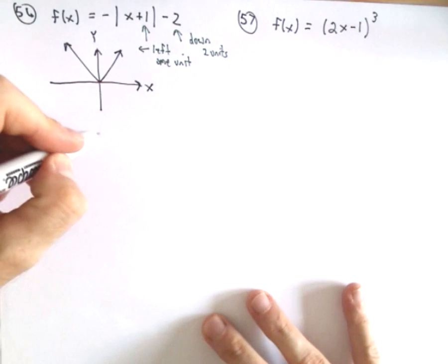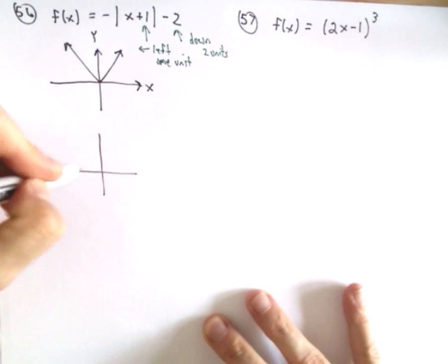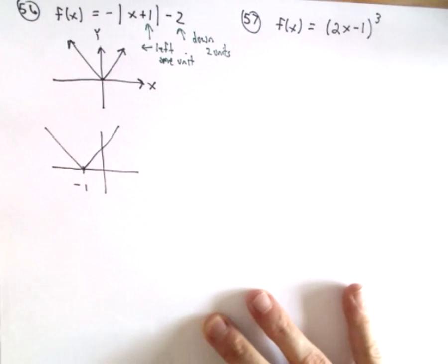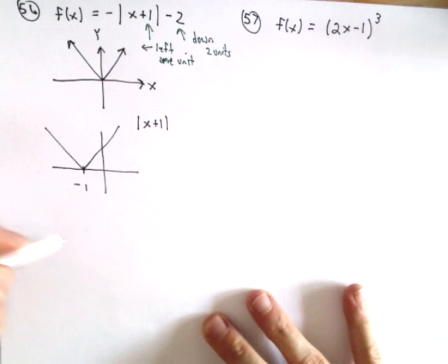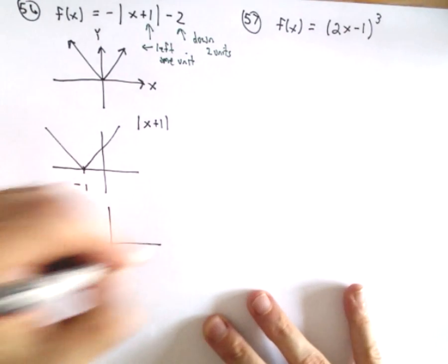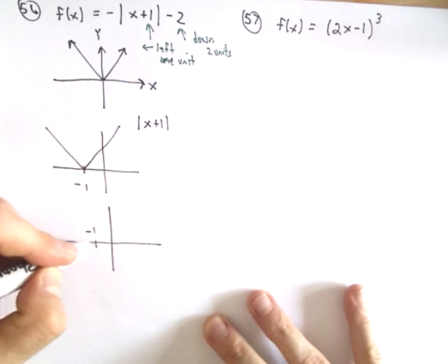Let's first off, let's kind of do it in steps. So the absolute value of x+1, that's going to shift it to the right one unit. Now the negative of that is going to reflect it about the x-axis. So there's -1 now, it's going to be pointing down.